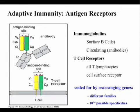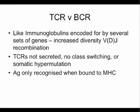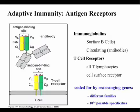The T cell receptor is encoded by VDJ genes that undergo recombination, which increases the diversity of the T cell receptor. Basically, the T cell receptor has an alpha chain, a beta chain, a variable and constant region, a short transmembrane domain, and a short cytoplasmic tail.